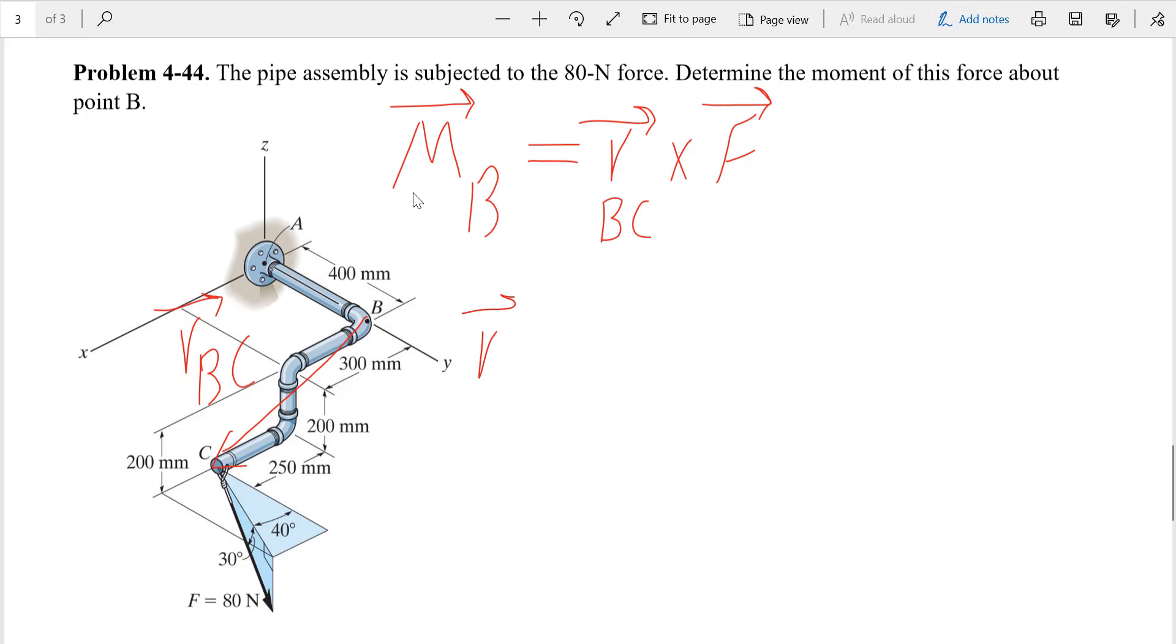So RBC would be equal to - we're going from B to C - we're going 0.55i minus 0.2k, and I'm using the meter unit. That's RBC.